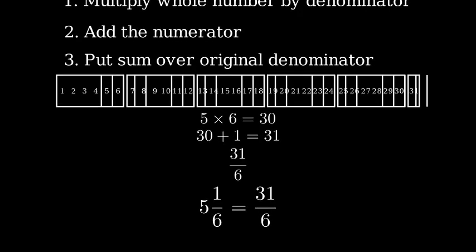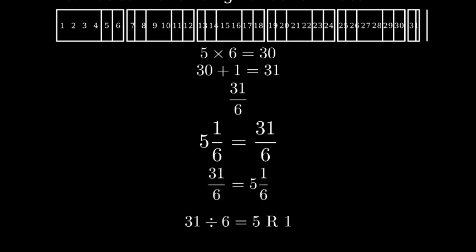Therefore, 5 and 1 sixth is equal to 31 sixths. To verify this is correct, we can convert 31 sixths back to a mixed number by dividing 31 by 6. 31 divided by 6 is 5 with a remainder of 1.